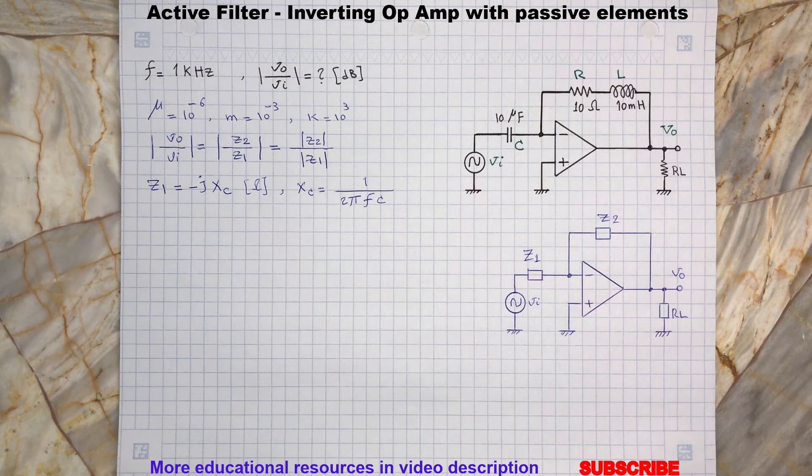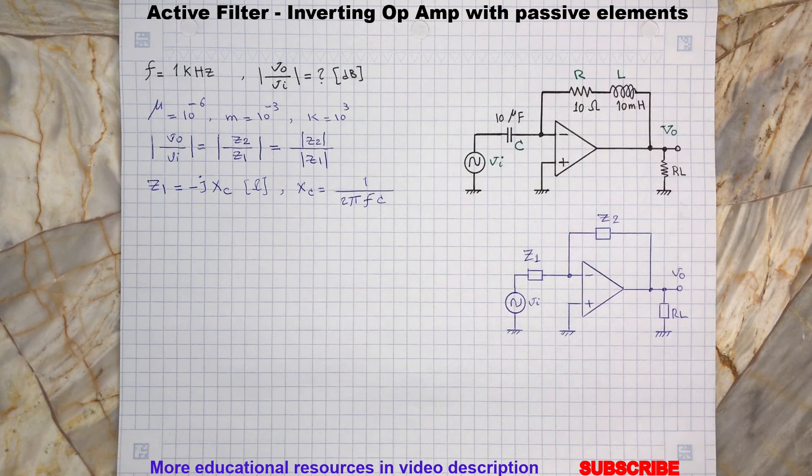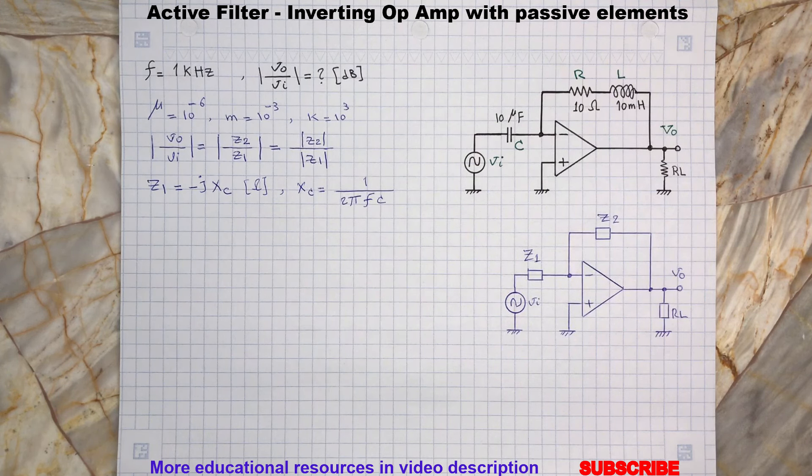Also remember the capacitive reactance is a negative imaginary component and inductive reactance is a positive imaginary component and their unit is ohm. In electrical engineering we use minus J for capacitive reactance and J for inductive reactance. Let's plug the given capacitance and frequency values in the expression and calculate the capacitive reactance.